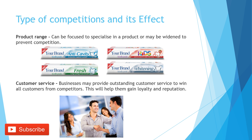Now we are going to talk about the types of competition and their effects. Businesses can use product range — it can be focused to specialise in a product or widened to prevent competition. For example, a brand might widen its product range to cover lots of segments in the market, so an adult buying a toothbrush doesn't have to go to another shop to buy toothpaste for their kids because this brand has a kids' range too.